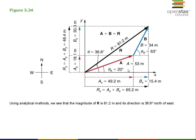Use your calculator to confirm: the x-component of A equals 53 meters times cosine of 20 degrees, which is the adjacent side to the angle. The y-component of A equals 53 meters times sine of 20 degrees. For B: 34 times cosine of 63 degrees gives 15.4, and 34 times sine of 63 degrees gives 30.3.